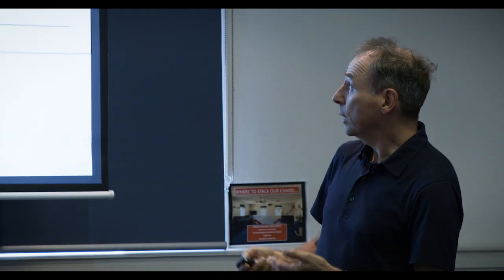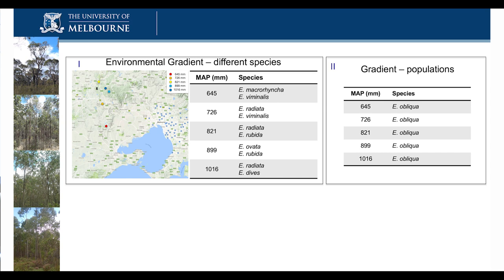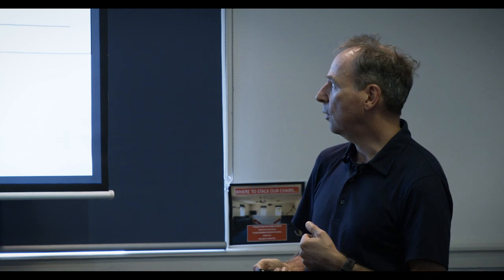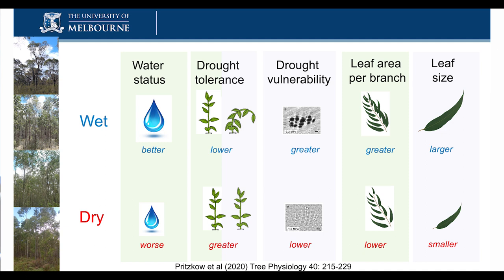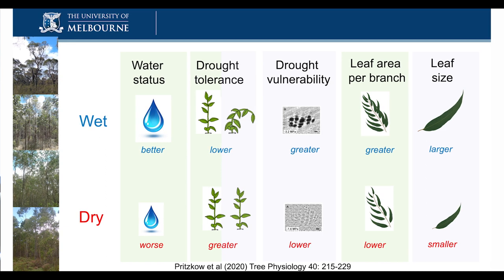We looked at the environmental gradient first — going to all five sites along the rainfall gradient and measuring these parameters. The outcome: at wetter sites, trees and provenances of Eucalyptus obliqua had better water status; at drier sites, worse water status. Not really surprising given the 500-millimeter rainfall gradient from 1,000 down to about 500 millimeters. But if you look at drought tolerance, trees at the wetter end are not as drought tolerant as those at the drier end — which is a good thing, because those trees have already adjusted or adapted to drier conditions. The same is true for drought vulnerability — trees at wetter sites are easier to embolize than those at drier sites.